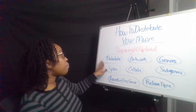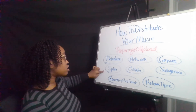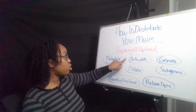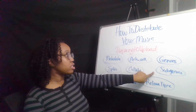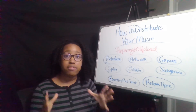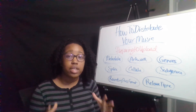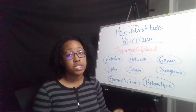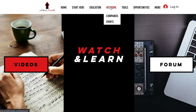When you're uploading, think of your metadata, your splits, your recording files, your collaborations, your artwork, your genre, your sub-genre, and your release type. Once you have that together, you'll be ready to go ahead and upload and distribute your music so you can start making some money.